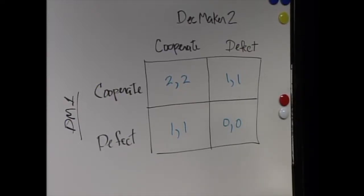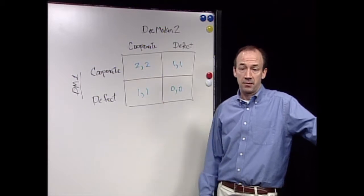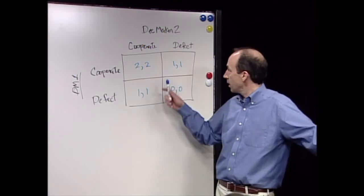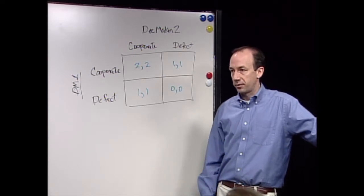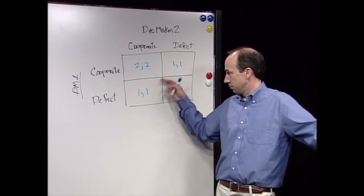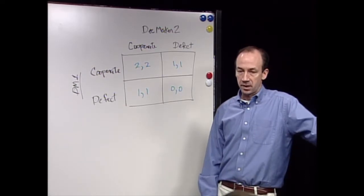So in this case, if they both cooperate, they each get the best they can get if they both cooperate. If one cooperates and the other defects, they each get half of what would be possible, and there's symmetry there. If they both defect, they get nothing.